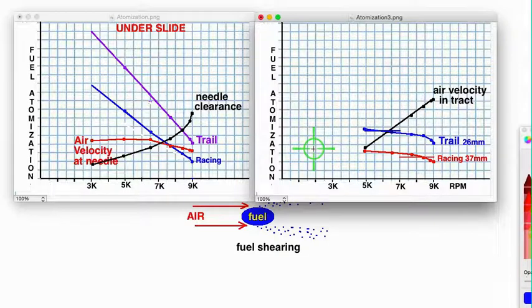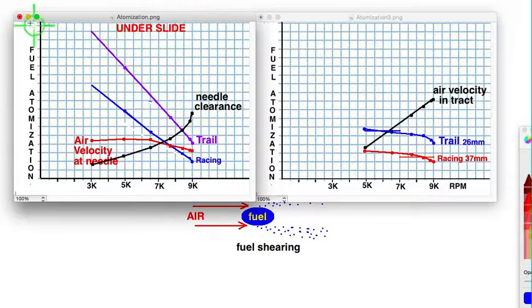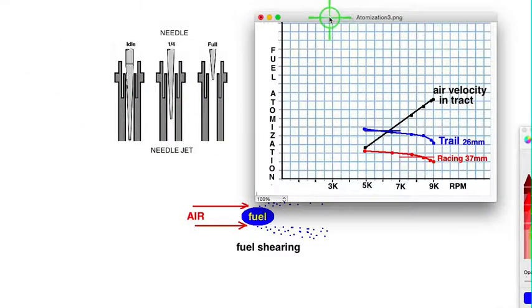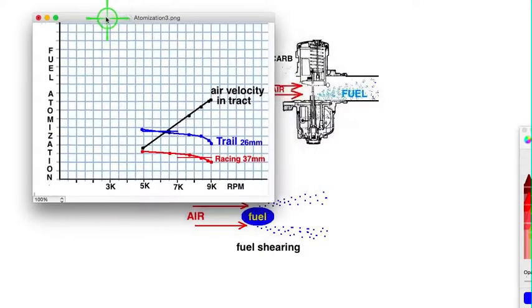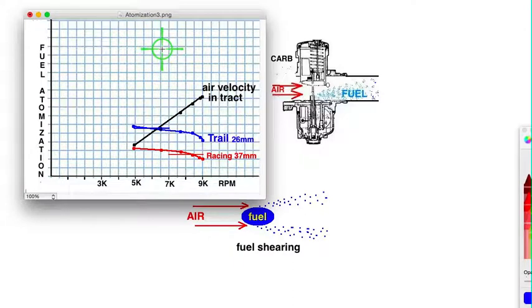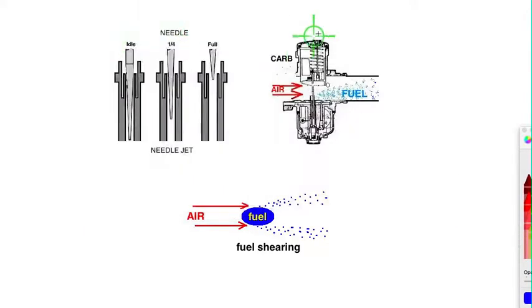Then the thought occurred to me: well, couldn't you have a variable area between the carburetor and the reed valve, so that as you open the throttle and get into the higher rpm, the atomization will go down as a result of lower air velocity? Yes, I think there's a way to do it. If with your throttle cable...